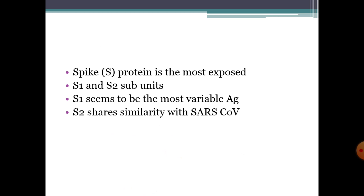The spike protein is the most exposed one. It has S1 and S2 subunits. S1 seems to be the most variable antigen, and S2 is found to be similar to SARS-coronavirus.